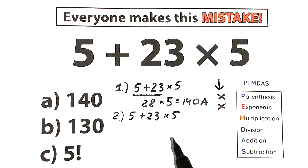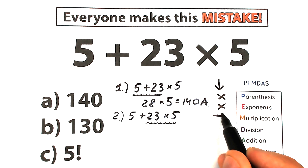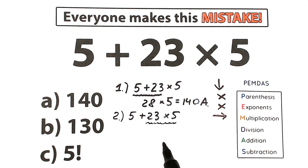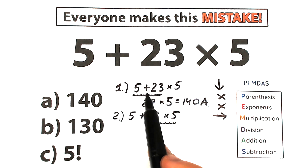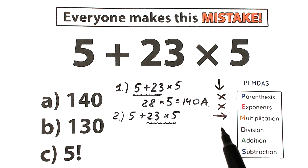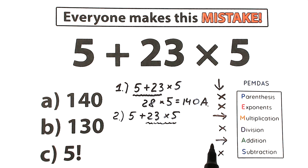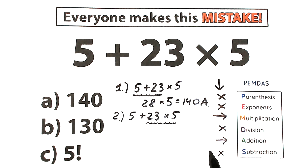Next step: the multiplication and division group. Let's scan — right here we have addition, and right here we have multiplication. We can see we should multiply first. Before, in the first interpretation, we added first and then multiplied — that was wrong. In this correct interpretation we multiply first, because multiplication comes before addition in PEMDAS. Higher position means higher priority, so multiplication has higher priority than addition.